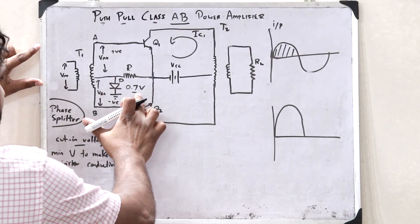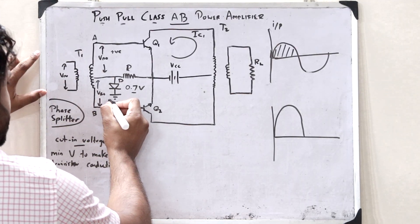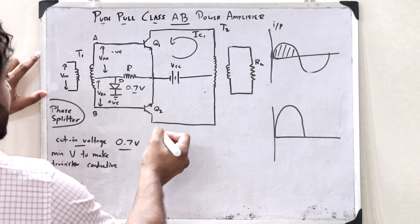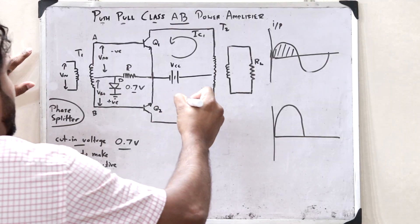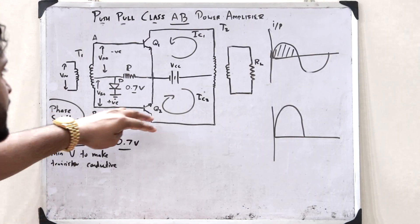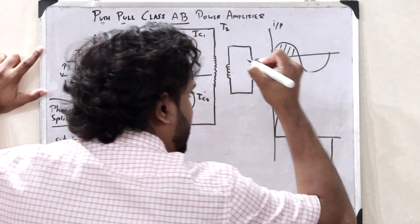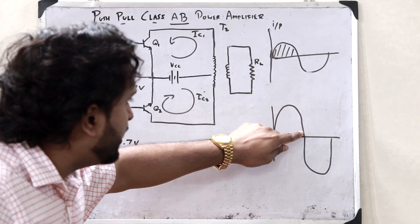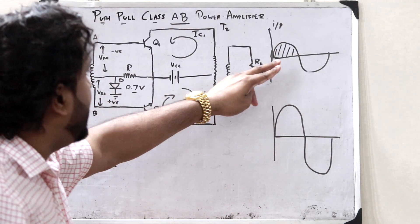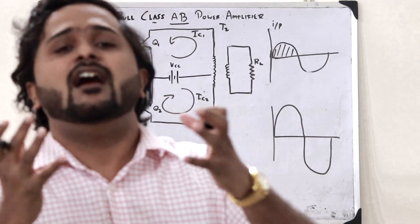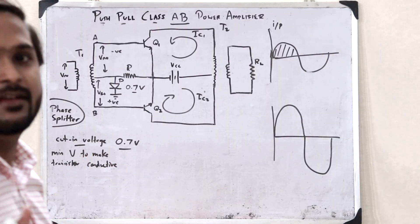There is no crossover distortion because we have given this 0.7 volt here. Similarly, in the case of the negative half cycle, VBO becomes positive and VAO becomes negative. Thus Q2 becomes forward biased and Q1 becomes reverse biased — Q2 is on and Q1 is off. A current starts flowing, let this be IC2, and this is obtained with the help of transformer T2 across RL as an amplified output. There is no crossover distortion, and even at the crossover point — even at zero volt — we are getting an amplified signal. This is simply why we use a class AB power amplifier: to eliminate the crossover distortion, just with the help of this particular diode.